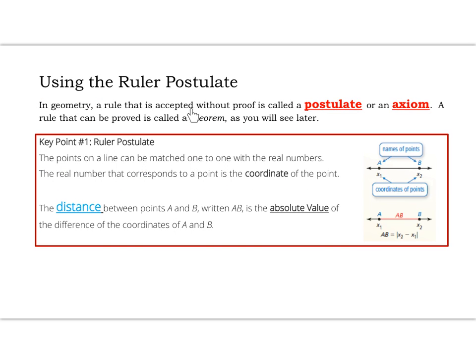In geometry, a rule that is accepted without proof is called a postulate, or an axiom. Key words here is without proof. So I don't need to prove the statements, postulates, true. They're accepted as true without proof. A rule that can be proved is called a theorem, as you will see later.